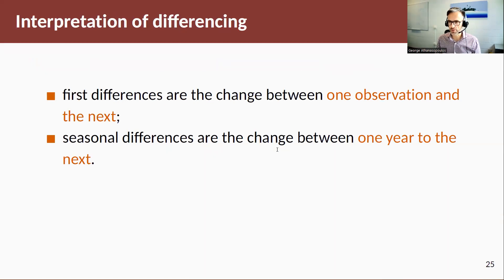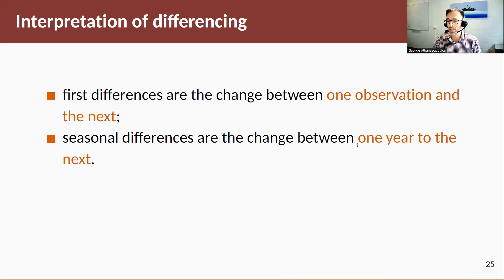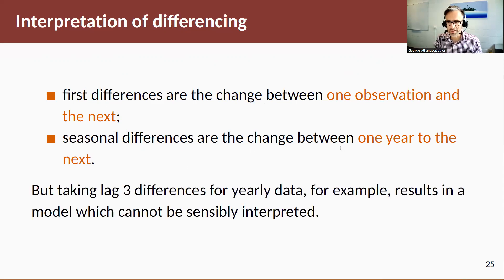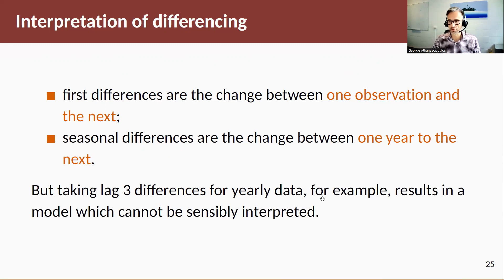When using differences, it is important that they be interpretable. First differences represent the change between one observation and the next. Seasonal differences represent the change from one year to the next. It does not make sense to take differences at arbitrary lags — for example, lag-3 differences for yearly data — because the resulting model cannot be given any meaningful interpretation.